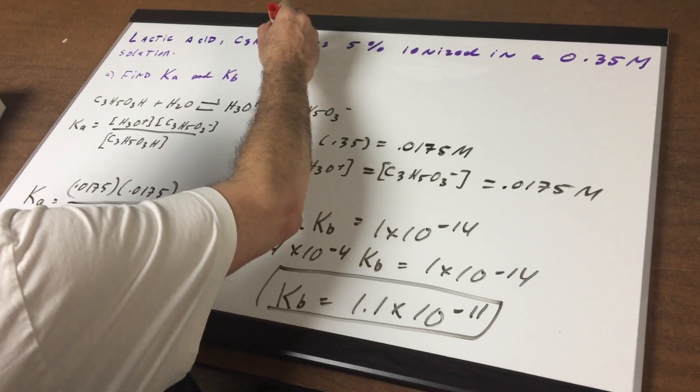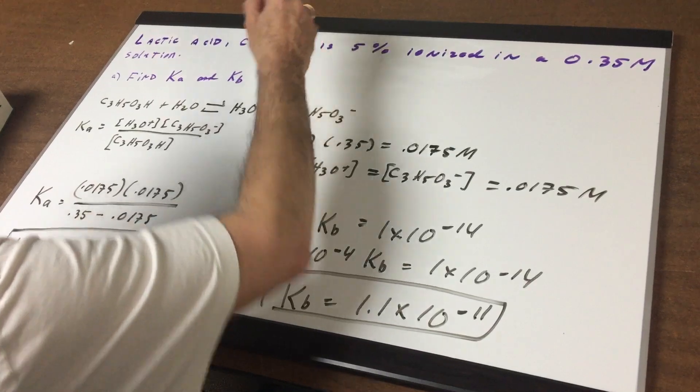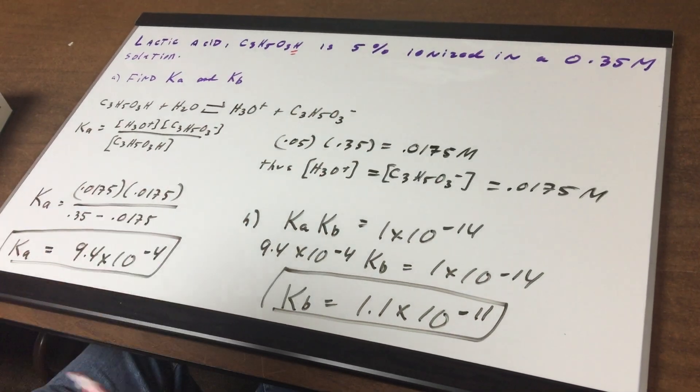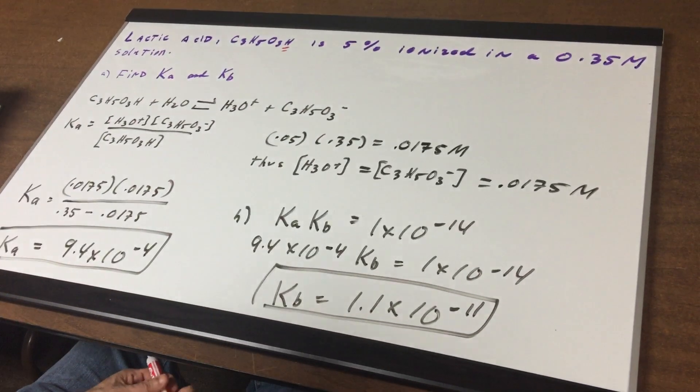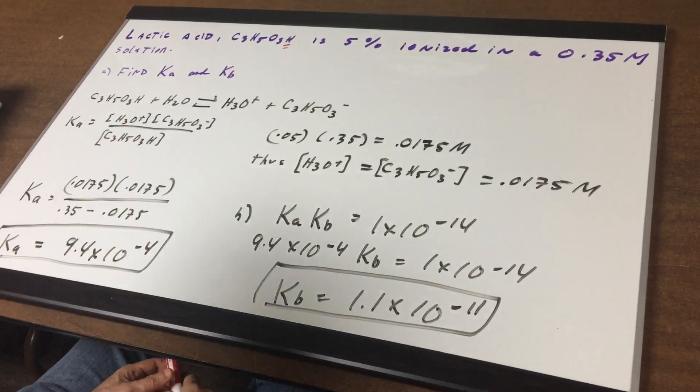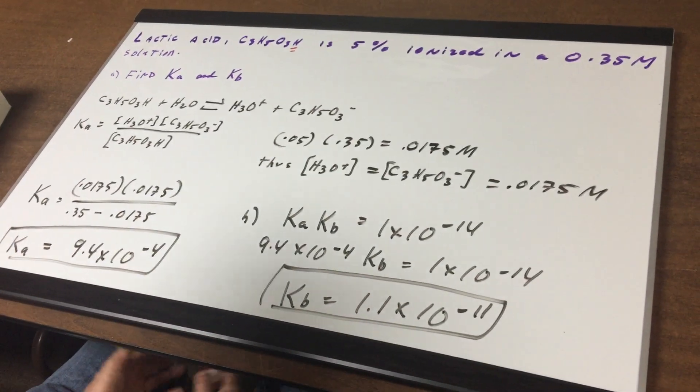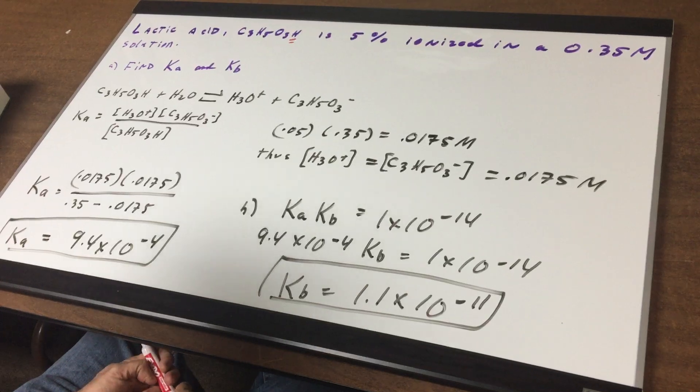But whenever they put the H on the outside that just tells you that's the H that's going to come off. And I say to you it's five percent ionized in a 0.35 molar solution and I want you to find the Ka for this.